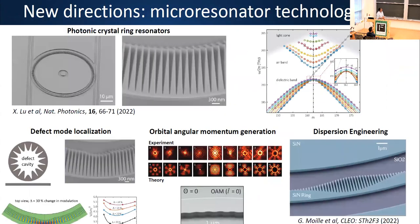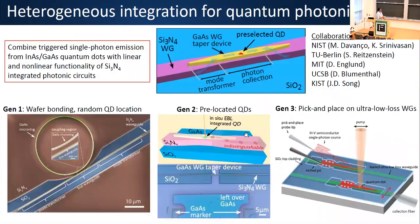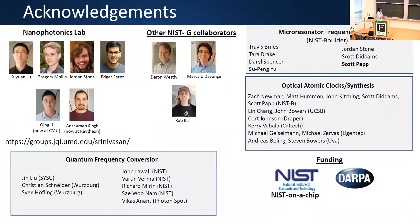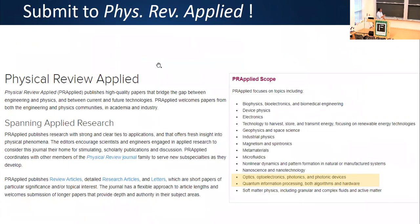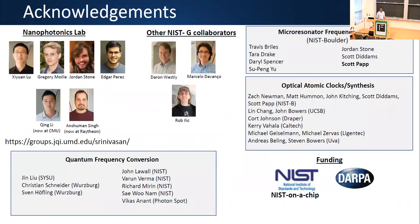We are also looking at new technologies: not just ring resonators, but incorporating photonic crystal patternings that give a lot more control over the electromagnetic field. You can eject light into orbital angular momentum states, do interesting dispersion engineering targeting specific resonances, and heterogeneously integrate sources. I'll stop by thanking all the people involved, our funding support from NIST and DARPA, and mention that I'm now an associate editor for Physical Review Applied — please consider it when submitting papers. With that, I can take any questions.